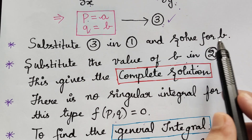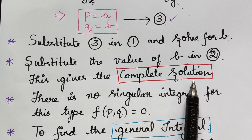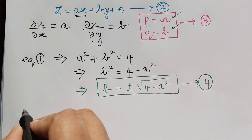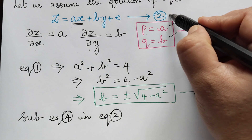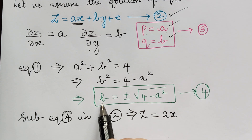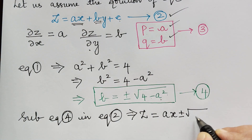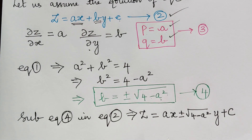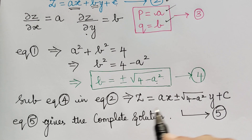The next step after solving for b is to substitute the value of b into equation 2, which gives us the complete integral. So substituting equation 4 into equation 2, z equals ax plus or minus square root of 4 minus a squared, multiplied by y, plus c. This gives us the complete solution, marked as equation 5.